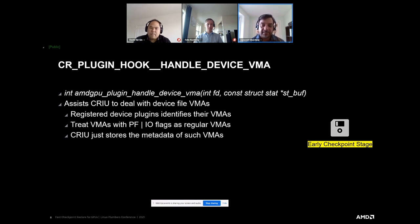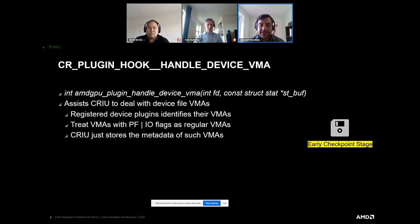This plugin hook gives a chance to any registered plugin to identify itself and associate with any such VMA that belongs to their device — essentially the driver can claim 'this is mine.' If no plugin exists, CRIU simply fails to checkpoint such a process. But if a plugin like ours exists, CRIU does not fail; it only saves the metadata about these VMAs and expects the plugin to take care of the rest of the checkpointing and restoring for such processes.